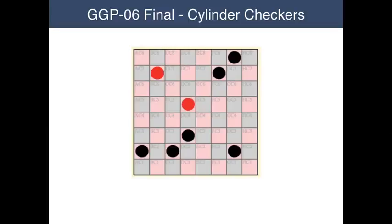Recall that in checkers, a player is permitted to move one of his ordinary pieces — pieces that are not kings — one square forward each turn. Here, red is moving from the top to the bottom, and black is moving from the bottom to the top. If a piece is blocked by an opponent's piece, it can jump that piece if there is an empty square on the other side. Moreover, the player must make such a jump if one is available. The objective of the game is to take all or as many of the opponent's pieces as possible while preserving one's own. Here's a snapshot of the game. It's red's turn to play. What should he do?